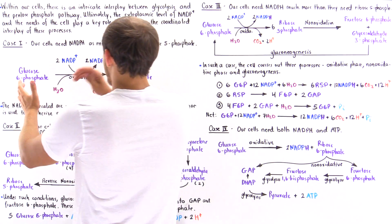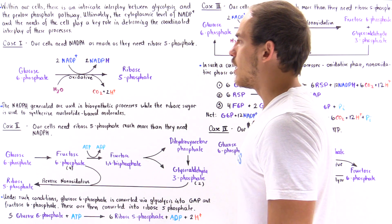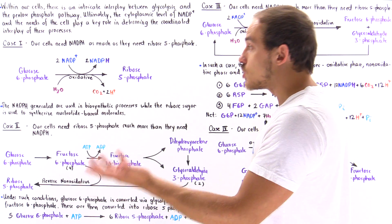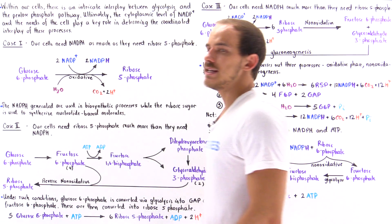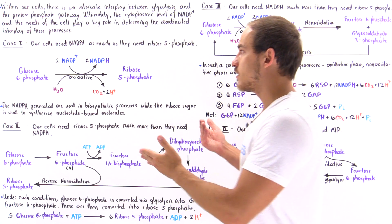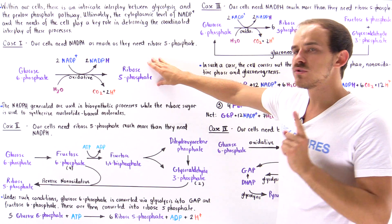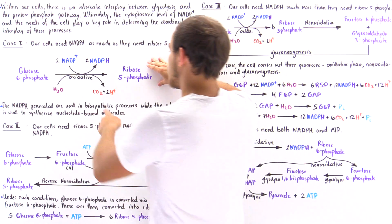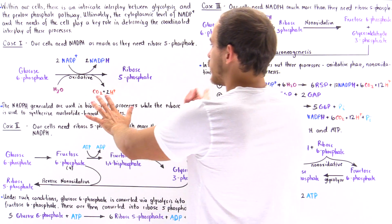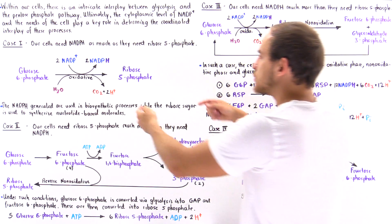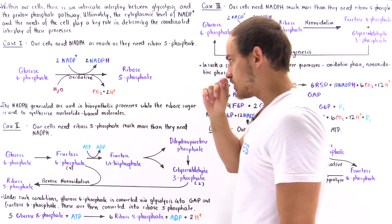This is what the reaction looks like. We have an input of a single glucose-6-phosphate molecule, a single water molecule, and two NADP+ molecules. What we form is two NADPH molecules and one ribose-5-phosphate molecule, and in addition we also produce a carbon dioxide and two H+ ions. The cell will then use these molecules to carry out the biosynthetic and detoxification processes discussed.